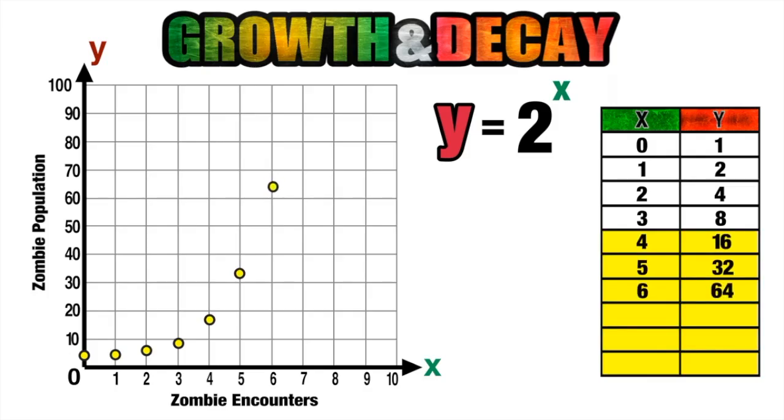So from our graph here, we can see that our initial population growth was slow and steady over the first few encounters, but quickly becomes quite rapid resembling that hockey stick curve that we spoke about earlier. So now that we have run out of room on our graph, we can go back to the table and look at just how quickly the zombie population is growing as the number of encounters increases.